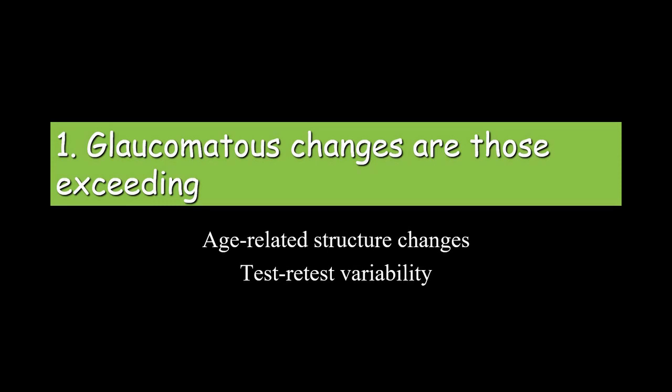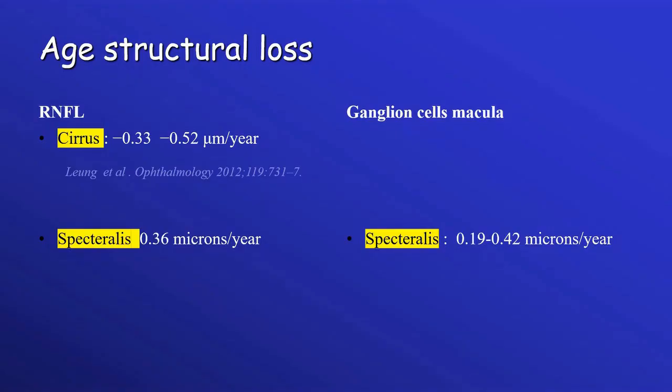The first method considers glaucoma changes as those exceeding age-related structural changes and exceeding test-retest variability. Each loss over time in the retinal fiber layer is between one-third to one-half micron per year, and for the Spectralis it is around 0.36 microns per year. For the ganglion cell of the macula on Spectralis, it is less than half a micron per year. So if we do OCT regularly every year, changes are less than one micron, meaning age is not a considerable factor.